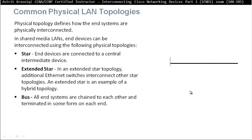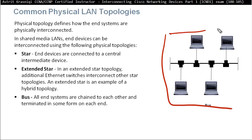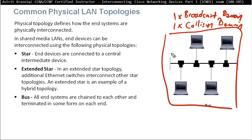In the bus topology, everything works in one collision domain and one broadcast domain. If one device is sending data, all other devices have to stop, listen, and wait. Only one device can send at a time — you can think of it as half duplex.